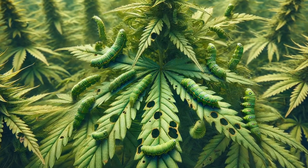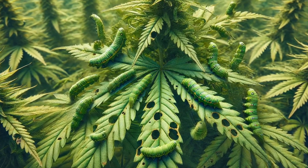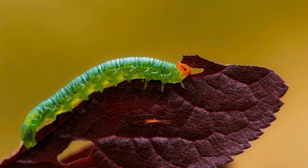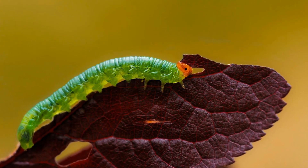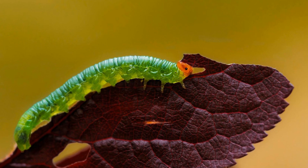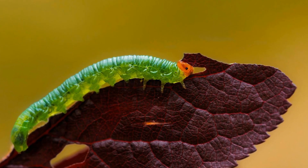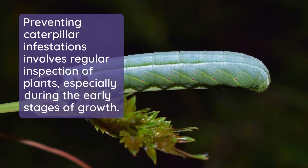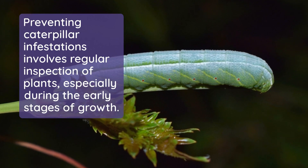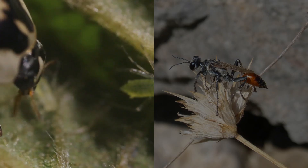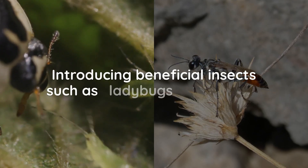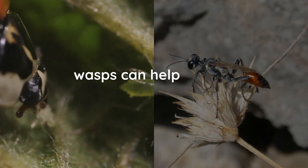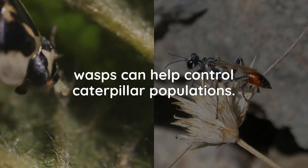Look for caterpillar droppings on leaves or soil, and chewed buds. They are usually green or brown and can be found hiding under leaves or within buds during the day, becoming more active during the evening and night. Preventing caterpillar infestations involves regular inspection of plants, especially during the early stages of growth. Introducing beneficial insects such as ladybugs and parasitic wasps can help control caterpillar populations.